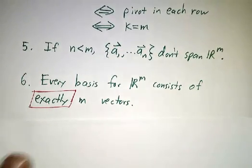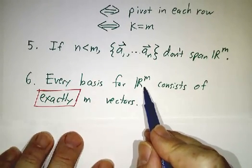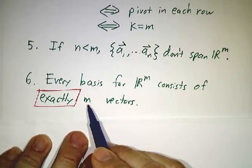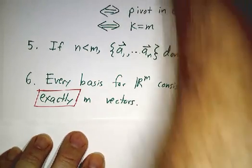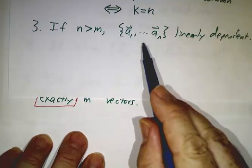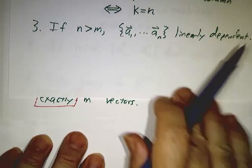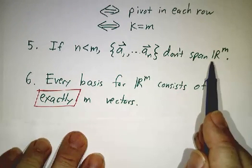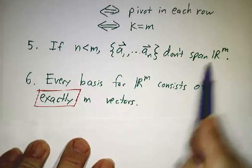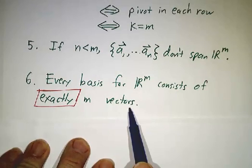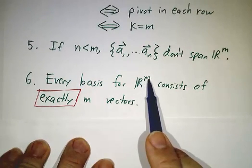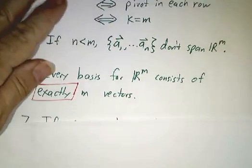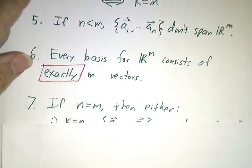So this tells us that if you want a basis for, say, R^7, it has to consist of exactly seven vectors. If you have more than seven vectors, they're linearly dependent. If you have fewer than seven vectors, they don't span. If you have something that spans and is linearly independent, it's got to consist of exactly seven vectors. Or for R^m, it has to consist of exactly m vectors. That's why we say the dimension of R^m is m.